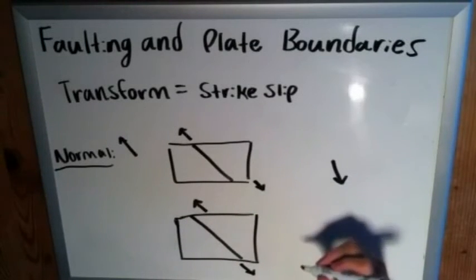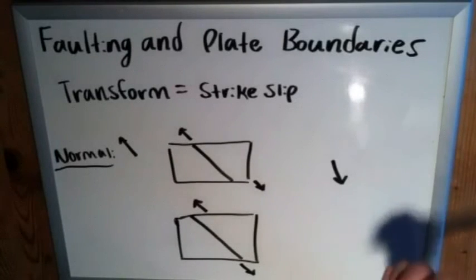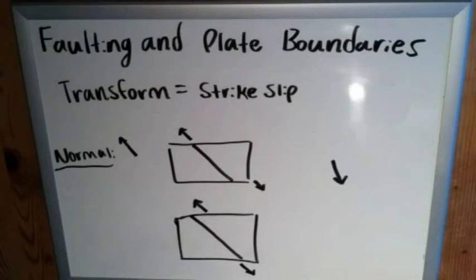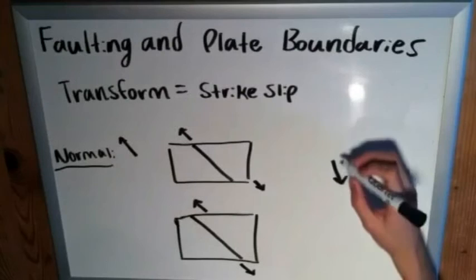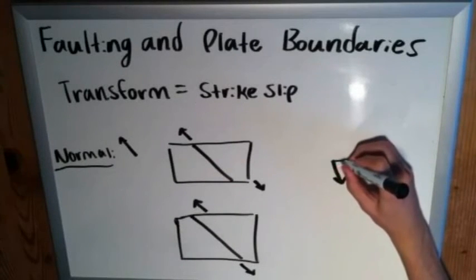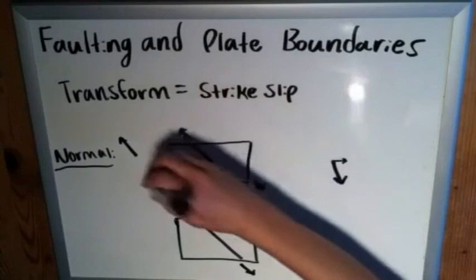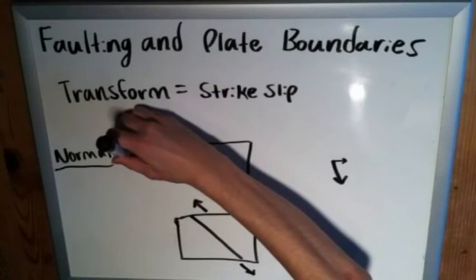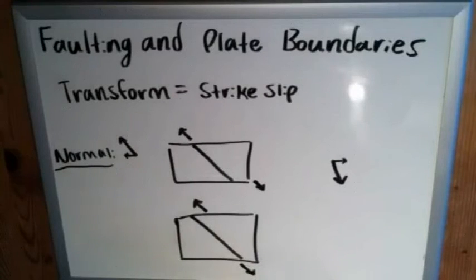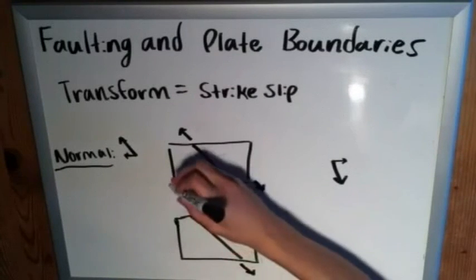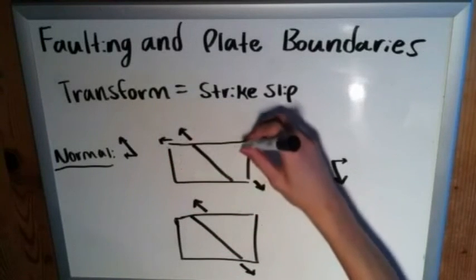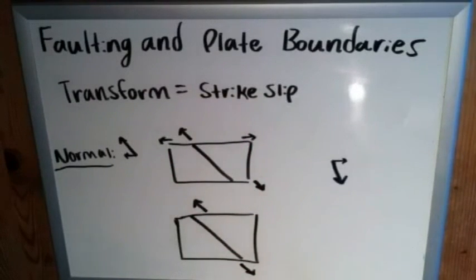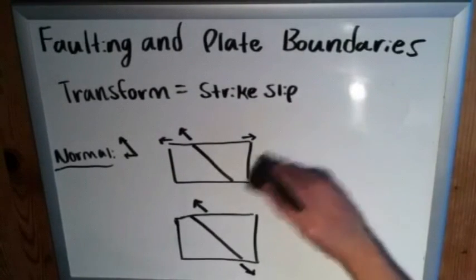If you look at solely the horizontal components of these vectors on a coordinate plane, this one is moving to the right and this one is moving to the left. Draw it again with just these horizontal components and you'll see it looks like the two plates are moving away from each other. So at a divergent plate boundary, we have normal faults.